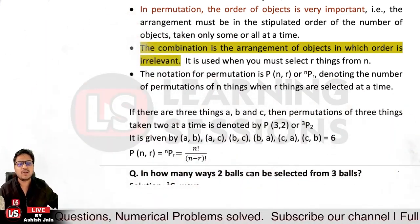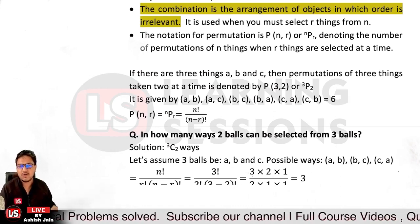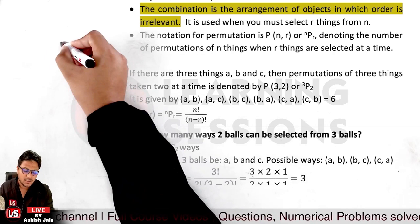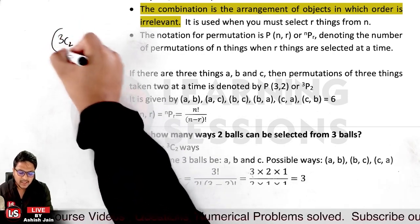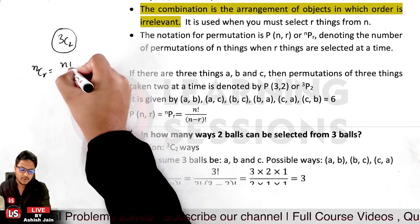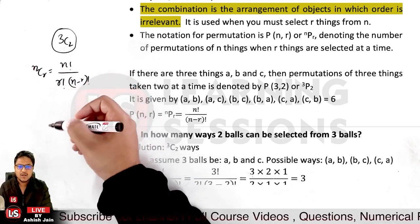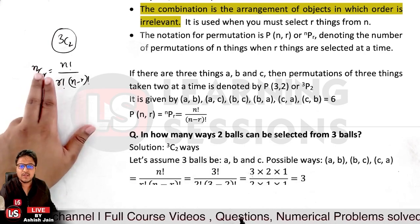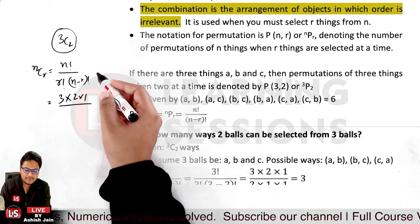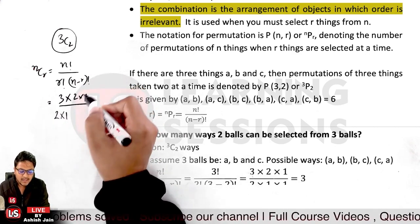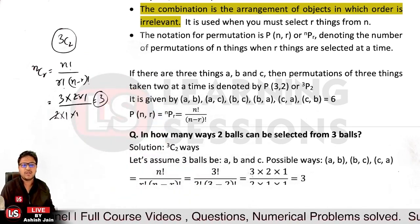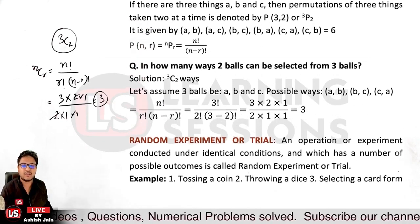Now for combinations — how many ways can 2 balls be selected from 3 balls? In this case, order never matters. The notation is 3C2. The formula for NCR is N factorial divided by R factorial multiplied by (N minus R) factorial. So 3C2 equals 3! divided by (2! × 1!) which gives 3 — there are 3 ways to select 2 balls from 3.